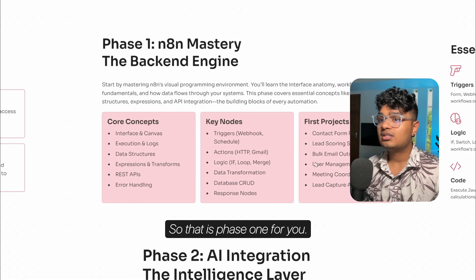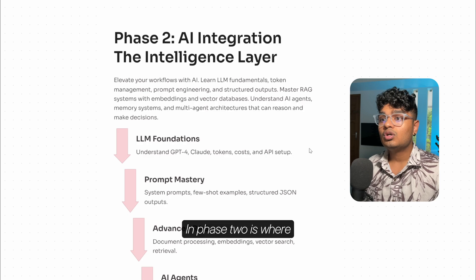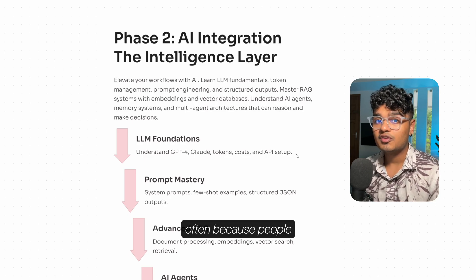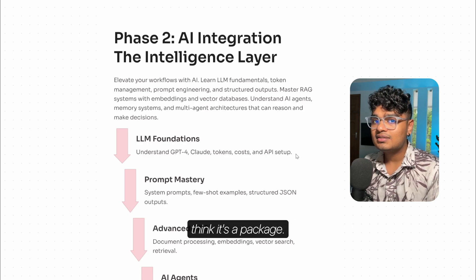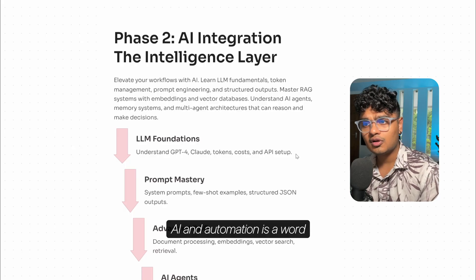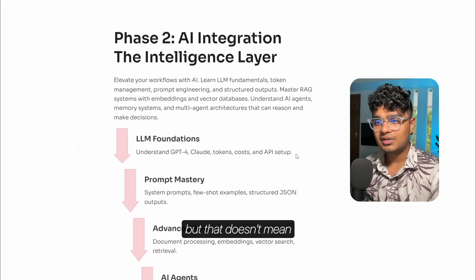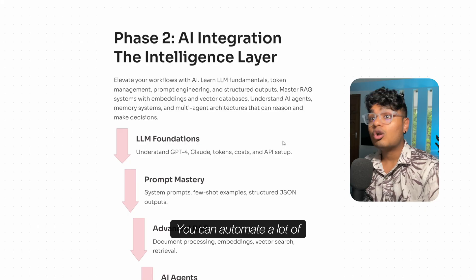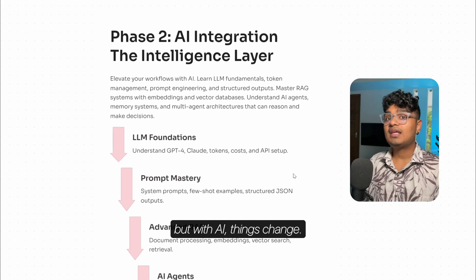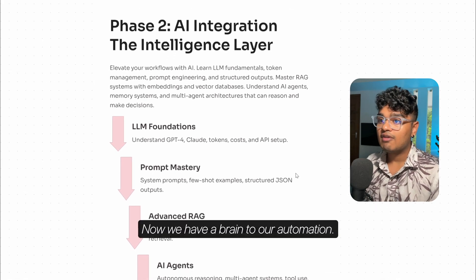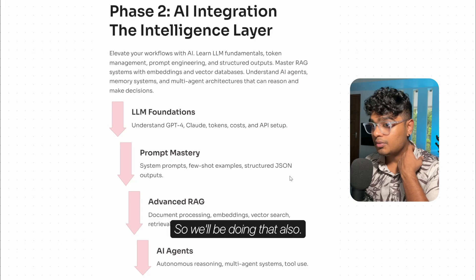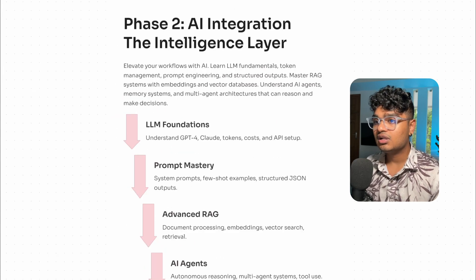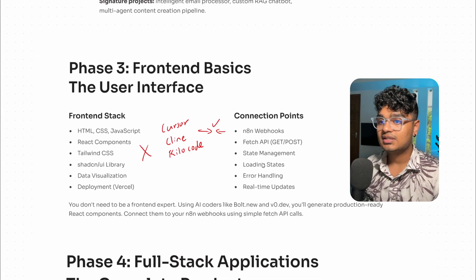That's Phase 1. Phase 2 is where we add the AI layer. People often confuse automation with AI — they think it's a package deal. But automation doesn't mean AI; you can automate a lot of things without AI at all. With AI, though, we add a brain to our automation. We'll also cover RAG — Retrieval-Augmented Generation — and learn all of that in the upcoming days.